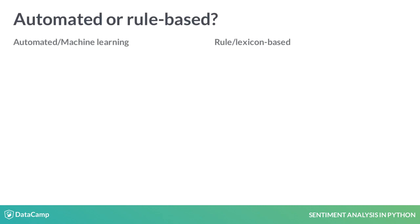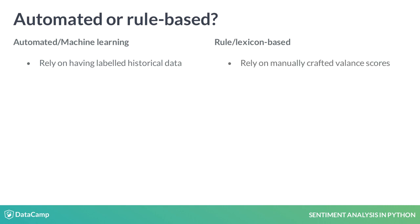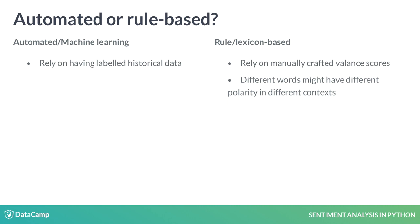Which method should one use? A machine learning sentiment analysis relies on having labelled historical data, whereas lexicon-based methods rely on having manually created rules or dictionaries. Lexicon-based methods fail at certain tasks because the polarity of words might change with the problem, which will not be reflected in a predefined dictionary. However, lexicon-based approaches can be quite fast, whereas machine learning models might take a while to train.